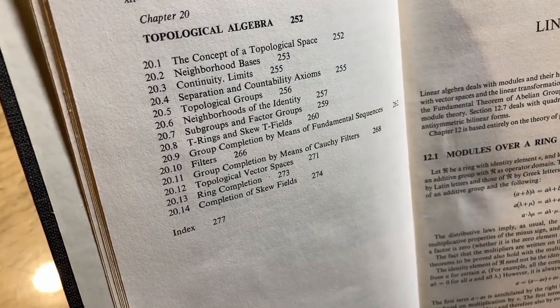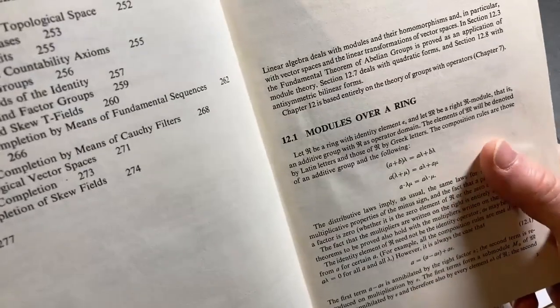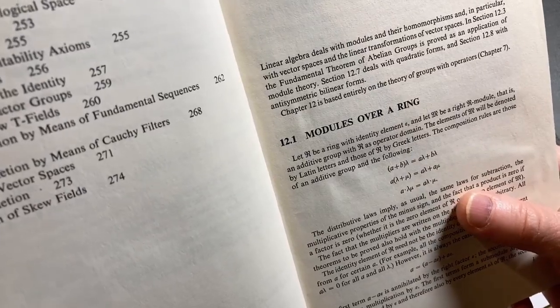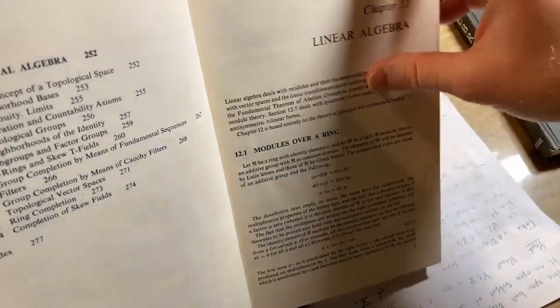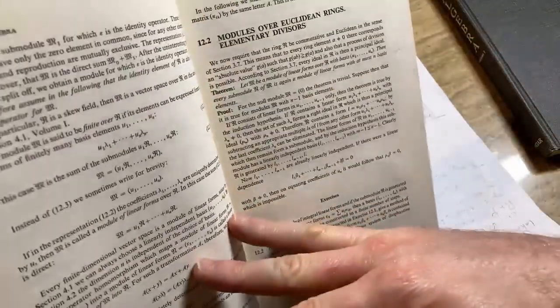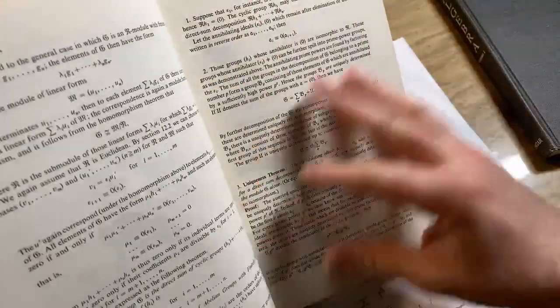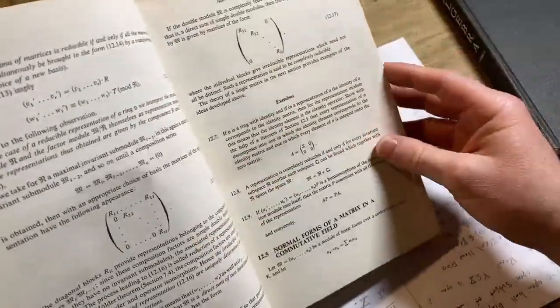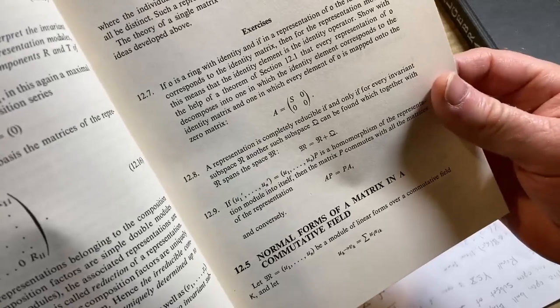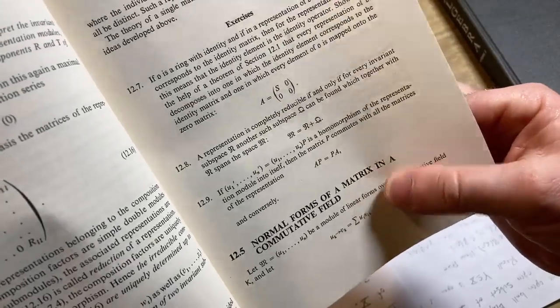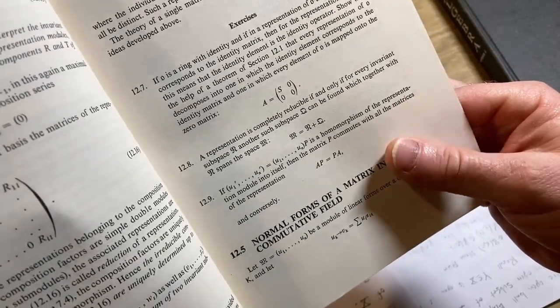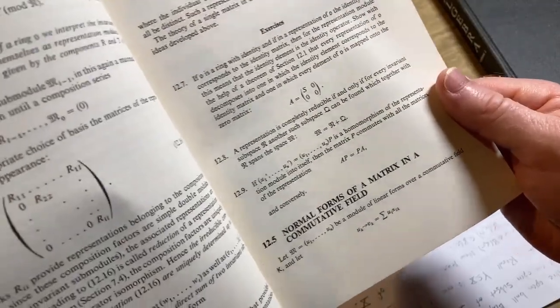I mean, I guess it's going to lead into vector spaces. Normal forms of a matrix in a commutative field. Interesting. Commutative field. You know, by definition, by modern standards, all fields are commutative.